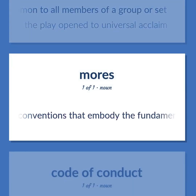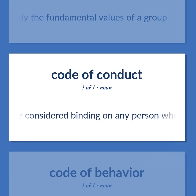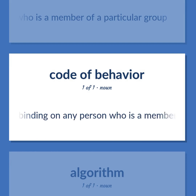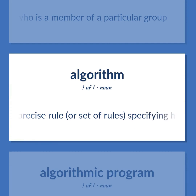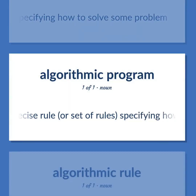Norms: sociology — the conventions that embody the fundamental values of a group. A set of conventional principles and expectations that are considered binding on any person who is a member of a particular group. Algorithm: a precise rule, or set of rules, specifying how to solve some problem.